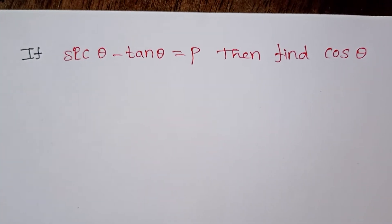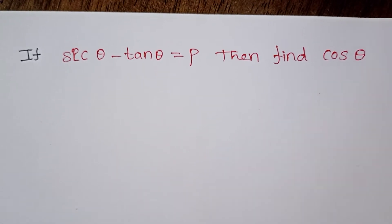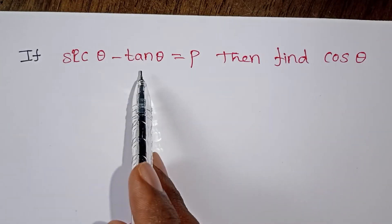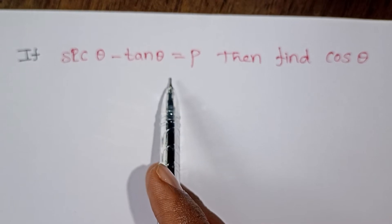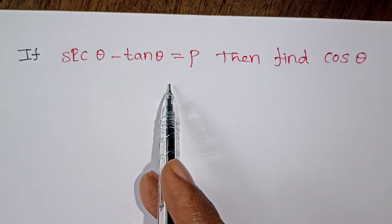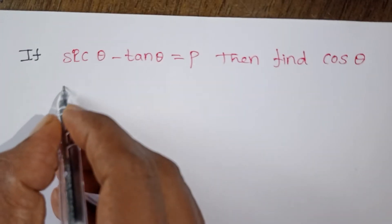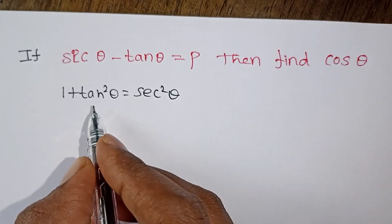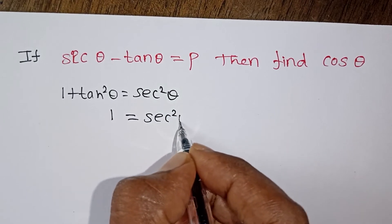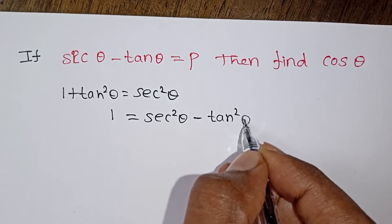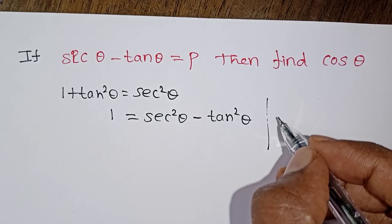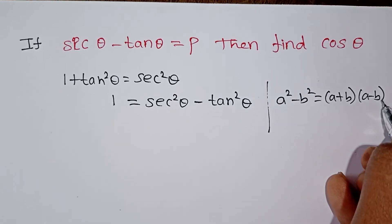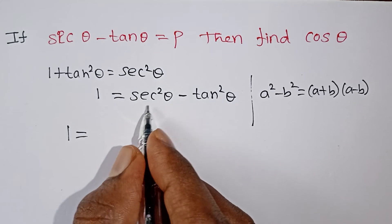Next question: if sec θ minus tan θ equals p, find the value of cos θ. We use the second identity: sec²θ minus tan²θ equals 1. This factors as (sec θ plus tan θ)(sec θ minus tan θ) equals 1.